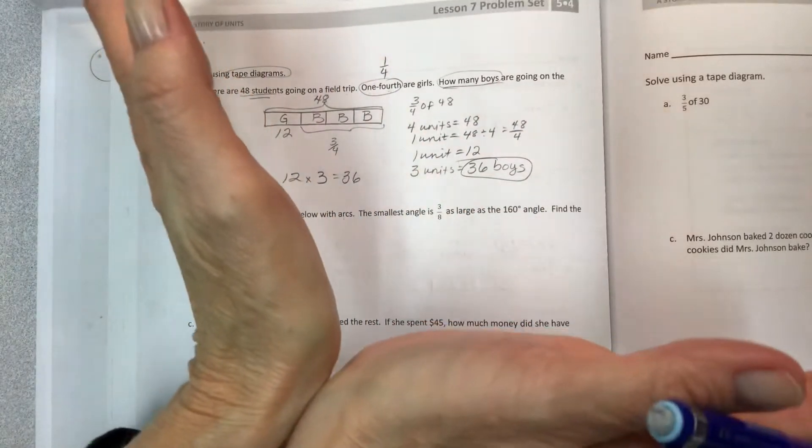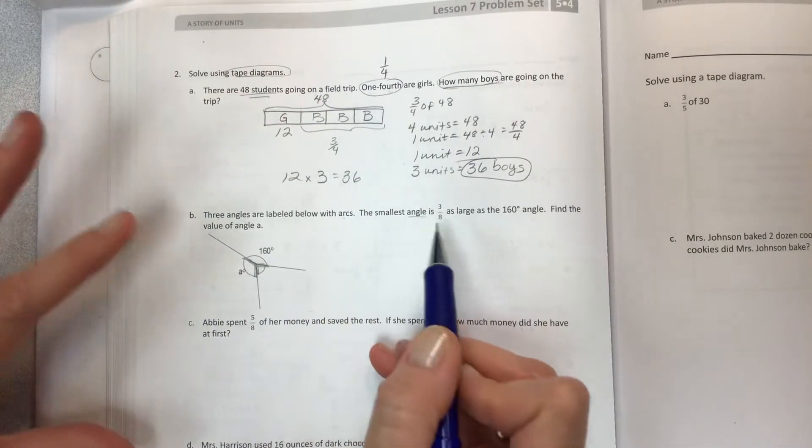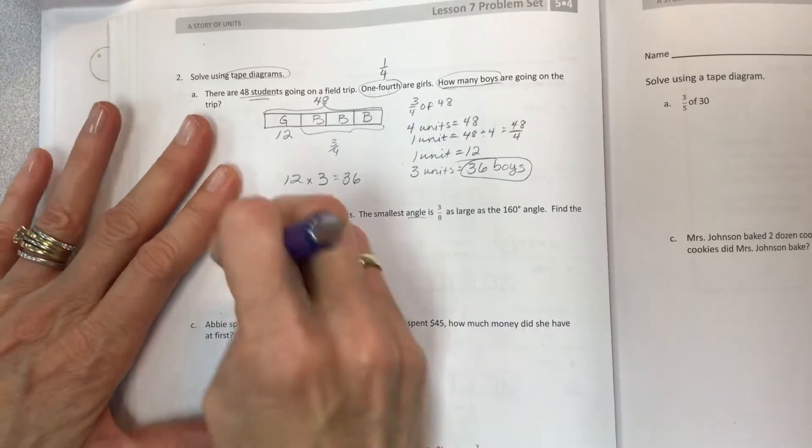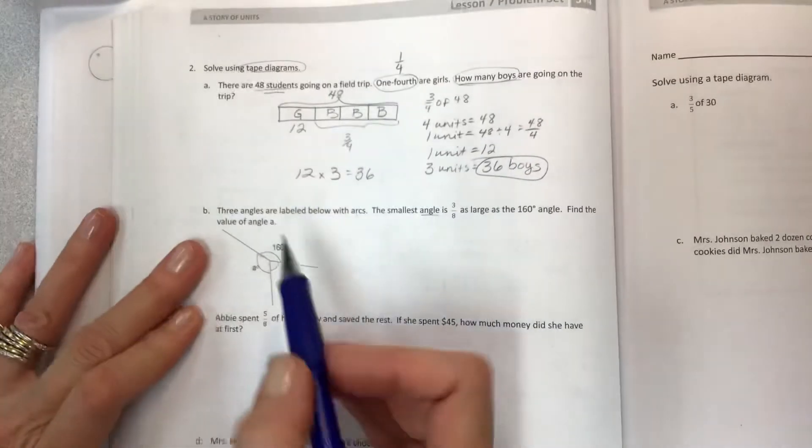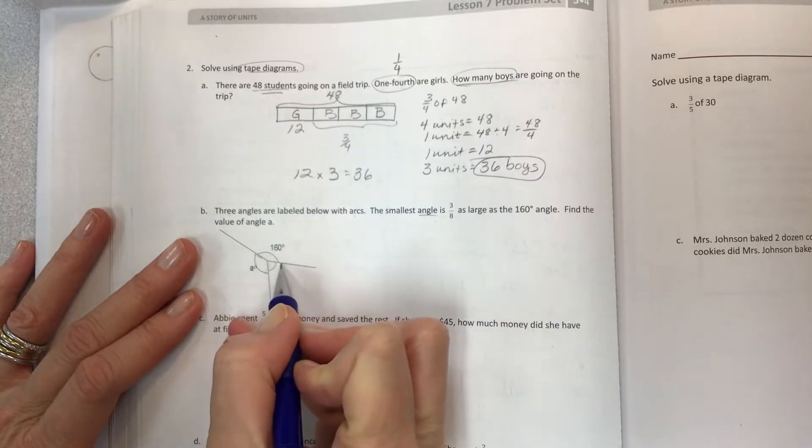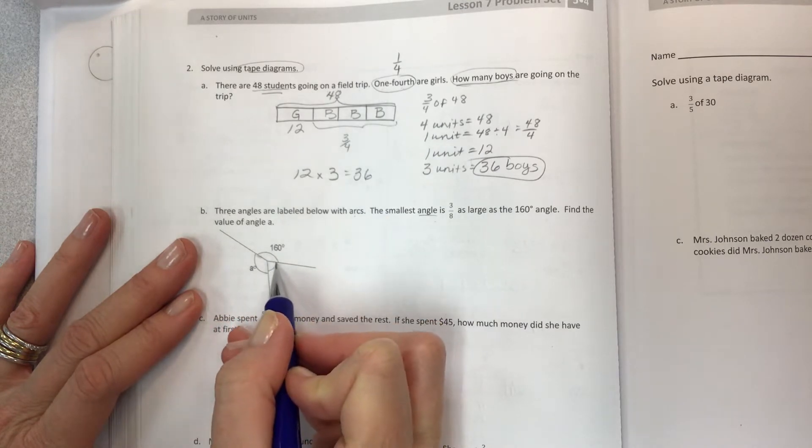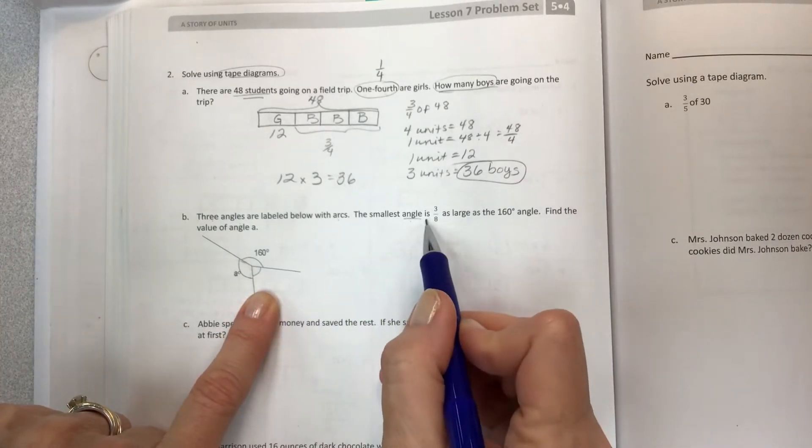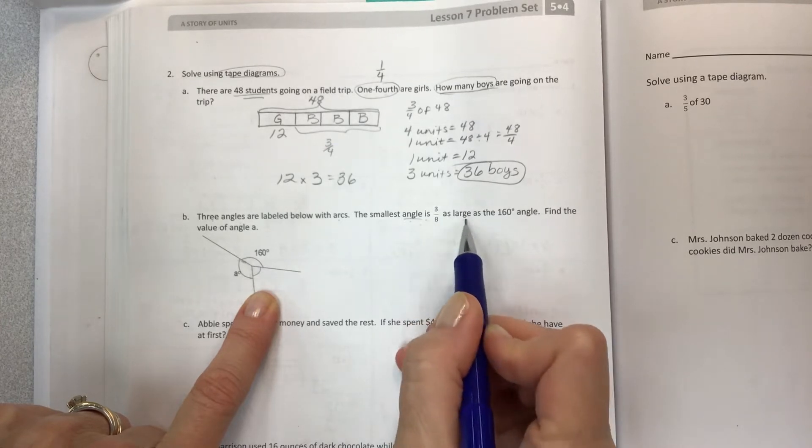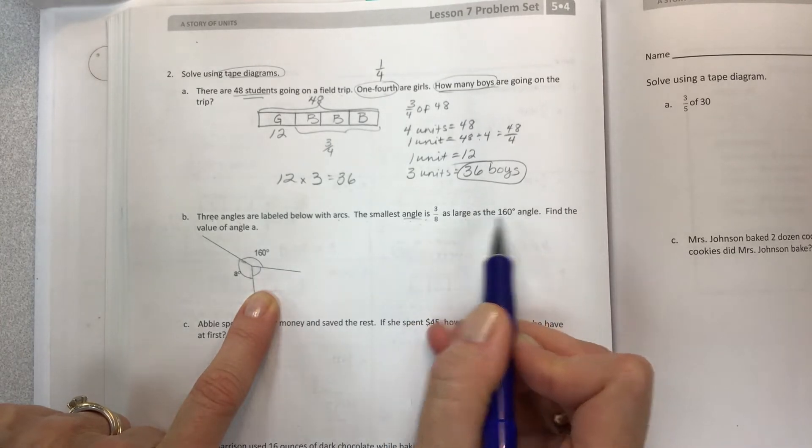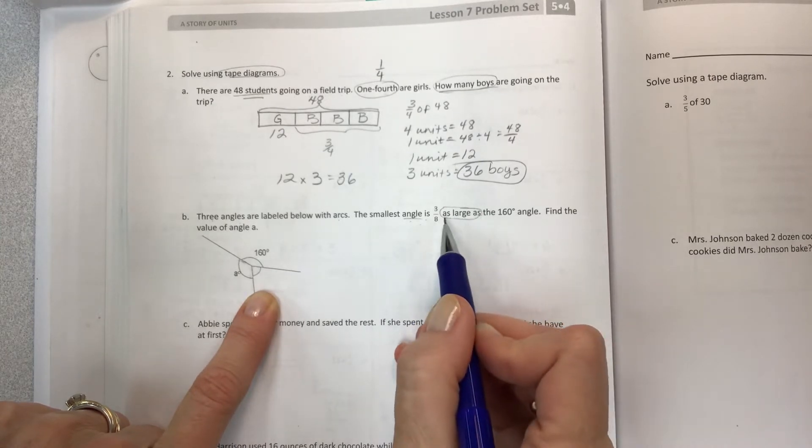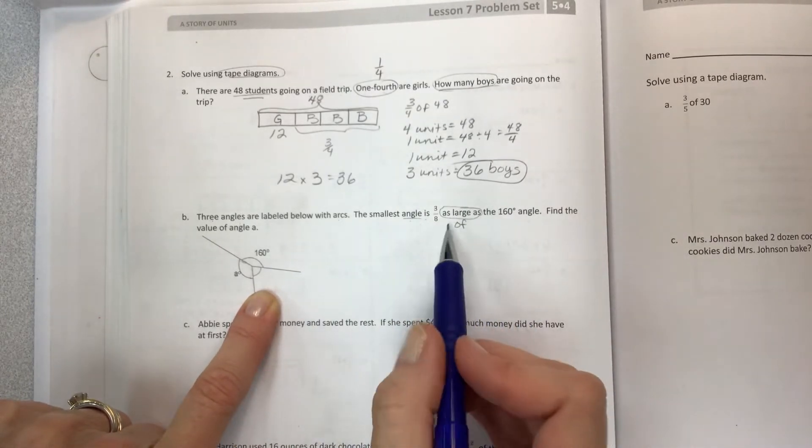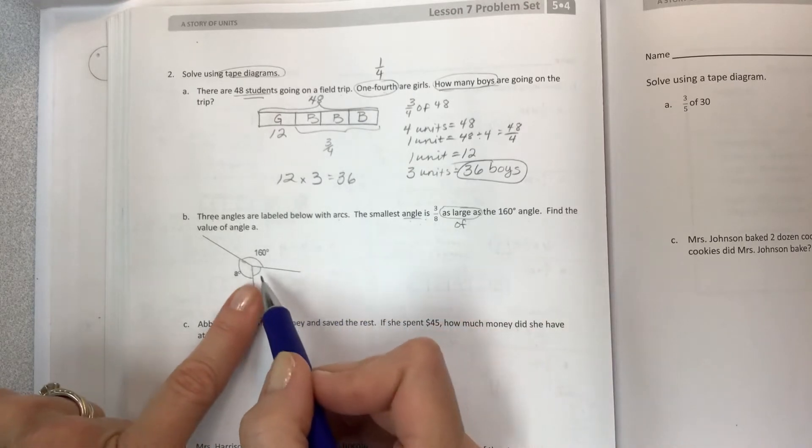There are all kinds of different ways you can make an angle. An angle is when two rays come together and they meet at this little vertex point. Three angles are labeled below with arcs. The arcs identify that there is an angle there that we have to find. The smallest angle, you just have to eyeball it, is three-eighths as large as the 160 degree angle. Three-eighths as large as is like saying three-eighths of.